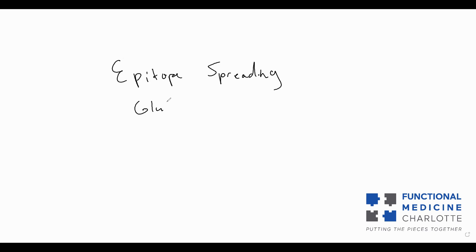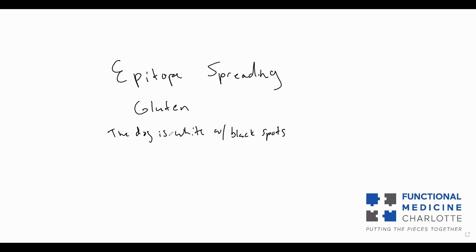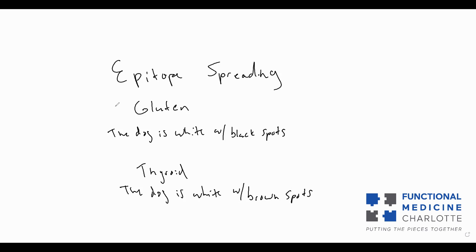If we have gluten — and gluten is a protein in wheat, and proteins are made up of amino acids — say the amino acid sequence for gluten is 'the dog is white with black spots.' A real amino acid sequence is just a bunch of letters, but this will make more sense. And say the person has Hashimoto's disease, so they have antibodies to their thyroid, and the amino acid sequence of the thyroid protein is 'the dog is white with brown spots.' So you can see here, there's what's called molecular mimicry.